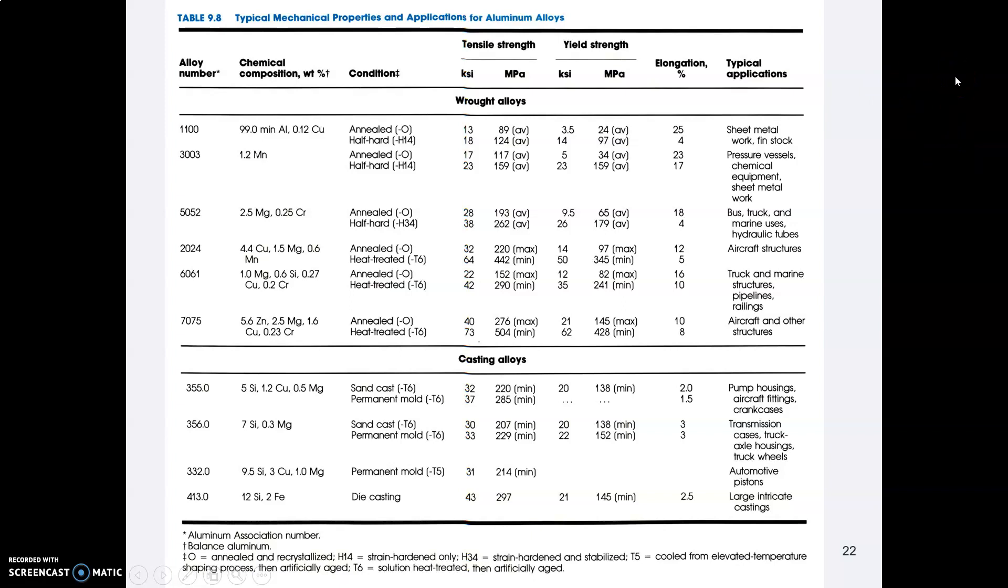Here is a chart out of that manufacturing engineering book, and I would like to call your attention to, well, first of all, just look over here along the right side of this chart. So this whole chart has to do with aluminum, and over here on the right are the types of uses that are common for the different grades of aluminum. Notice that you see aircraft structures in several places in here.